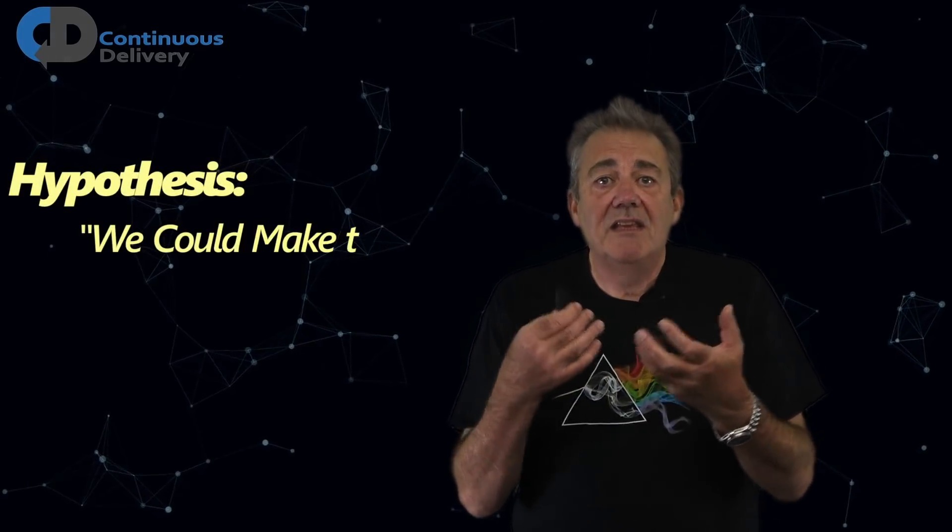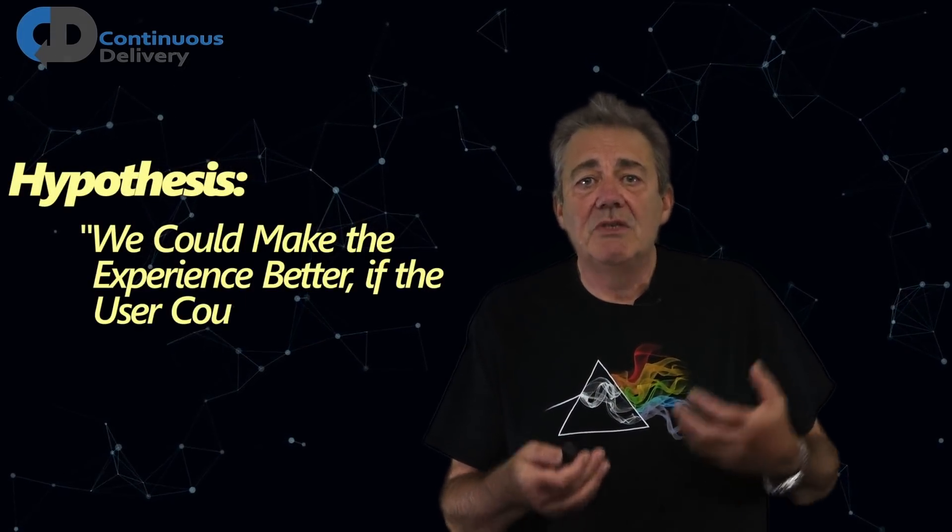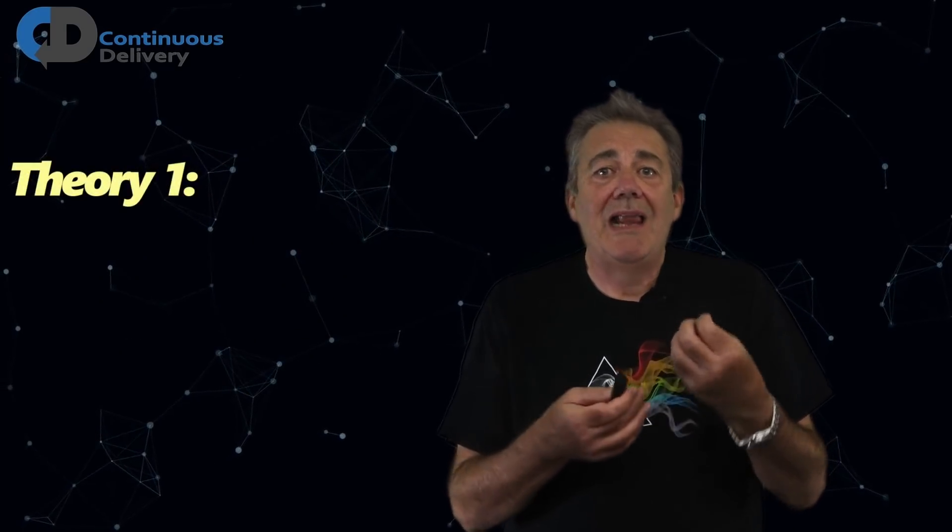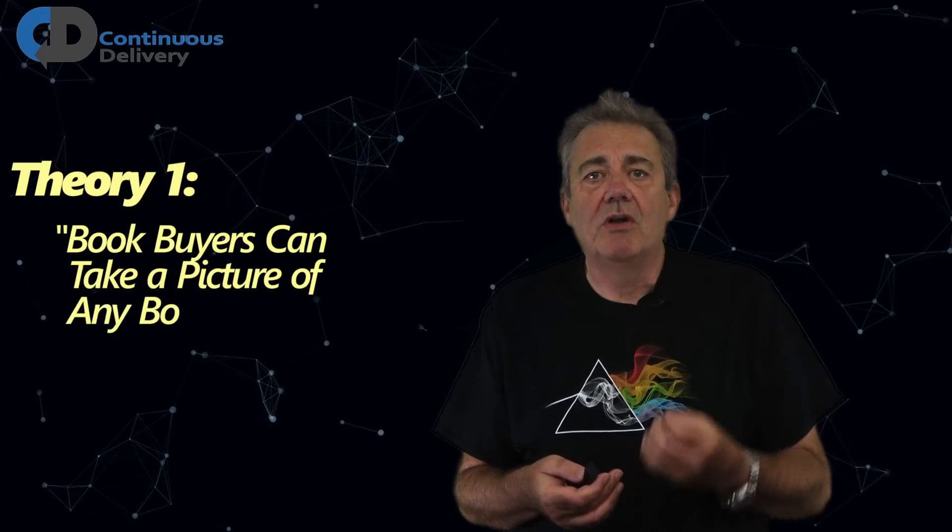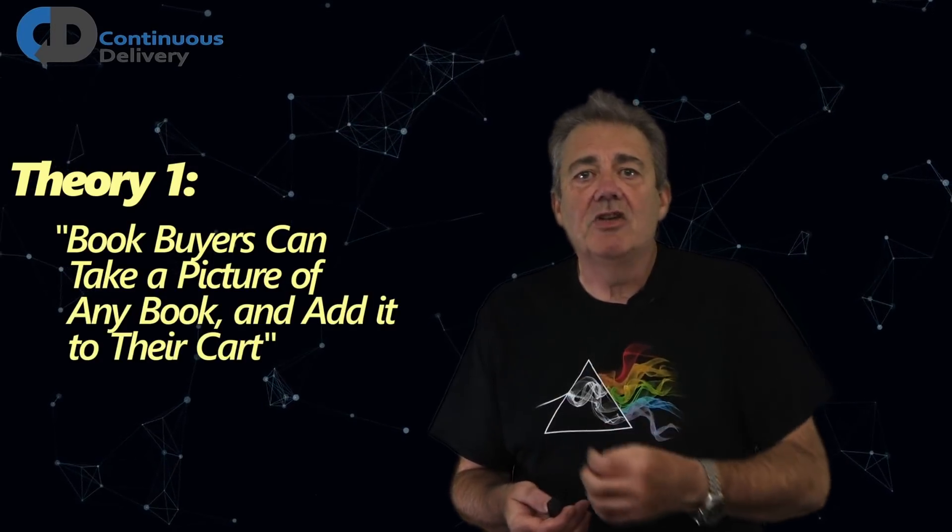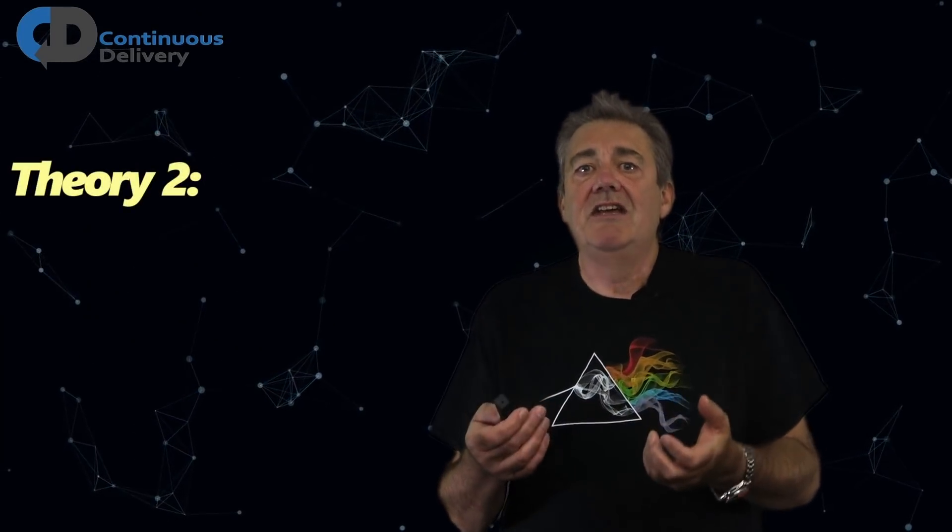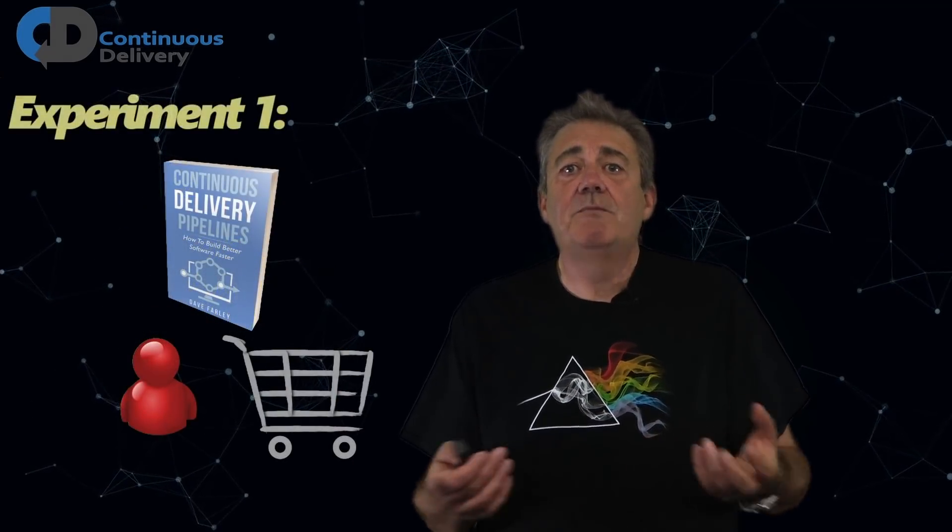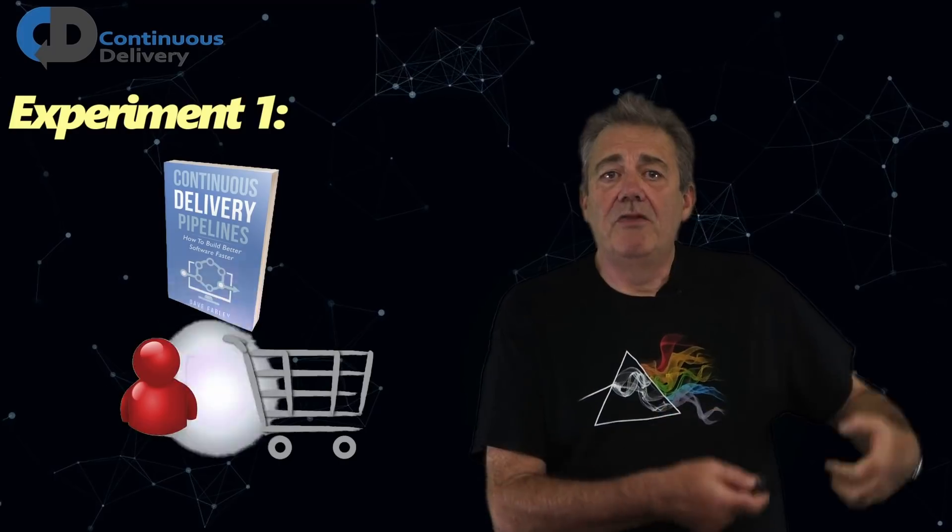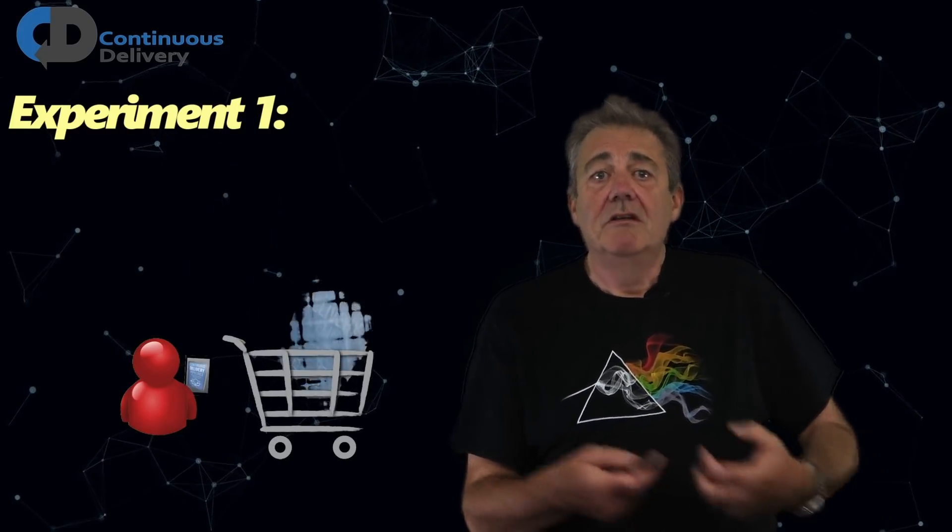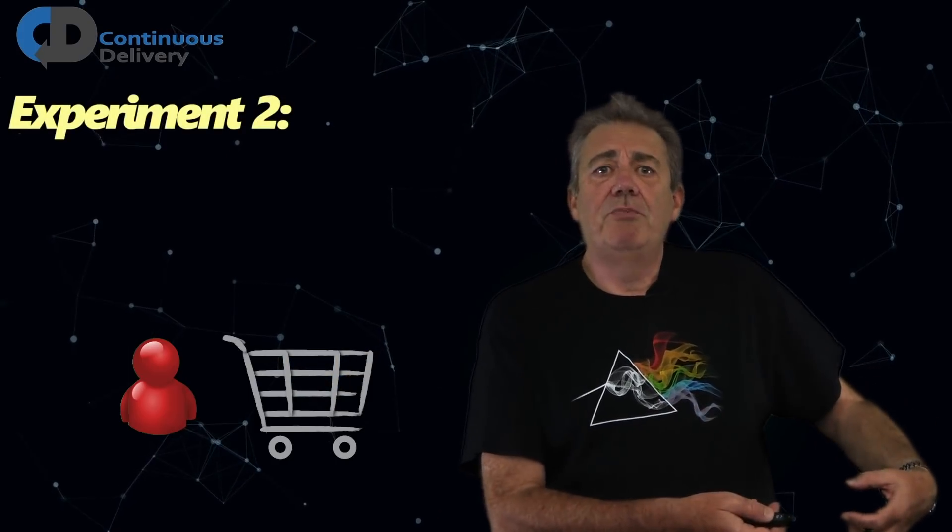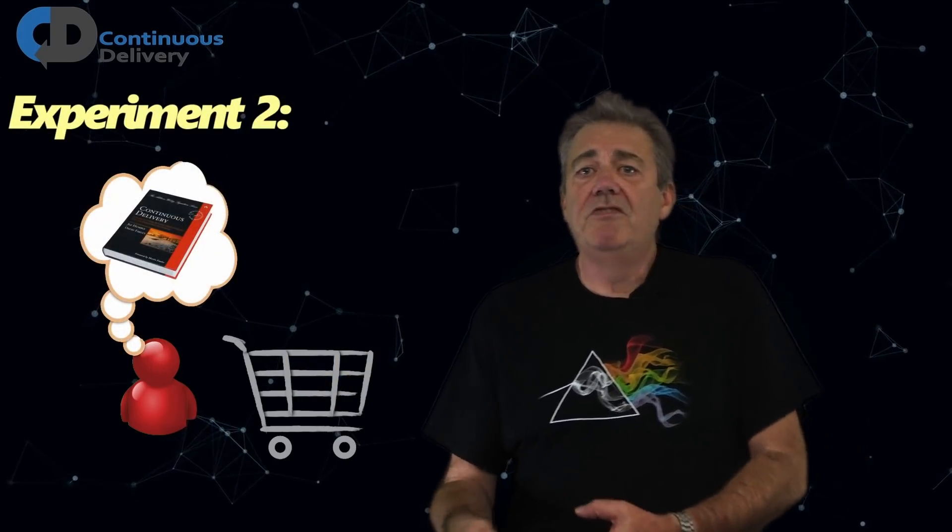Hypothesis. We could make this more efficient if we could allow them to add any book they saw to the cart. Theory. If we allowed book buyers to take a picture of any book on their phone, we could add it to their shopping cart. Second theory. We could add any book that they think of to the shopping cart. Experiment. Take a picture of the book, Continuous Delivery Pipelines. Confirm it's in the cart. Experiment two. Think of the book, Continuous Delivery. Confirm it's in the cart.